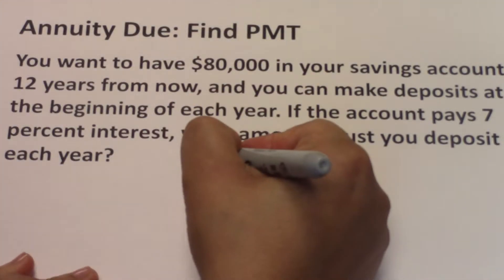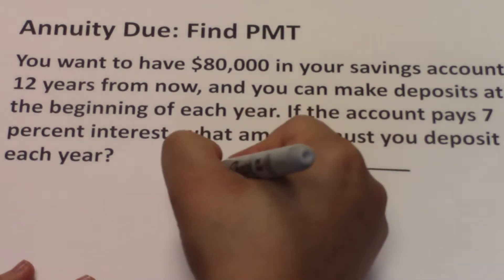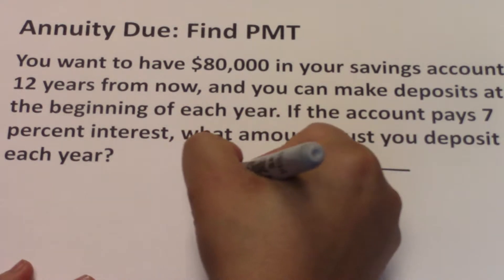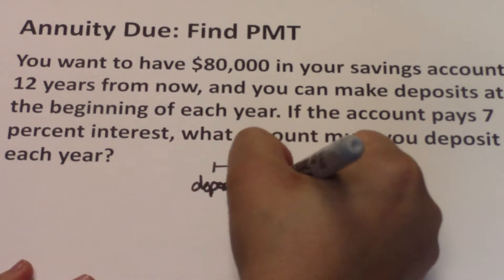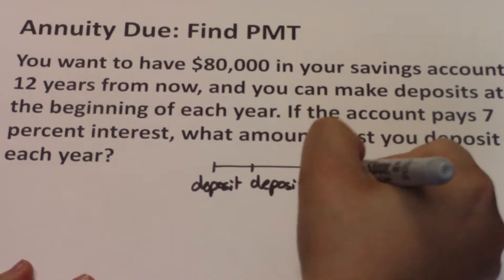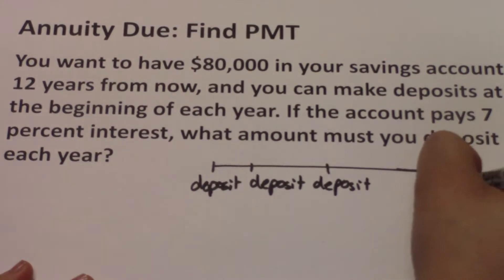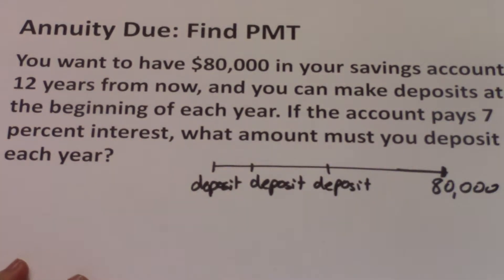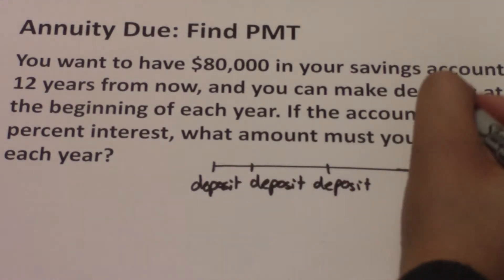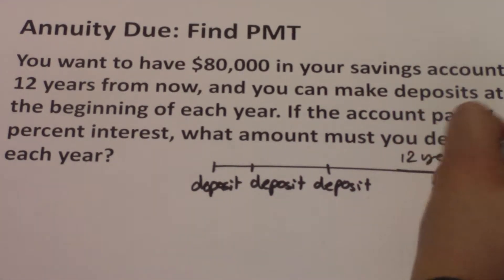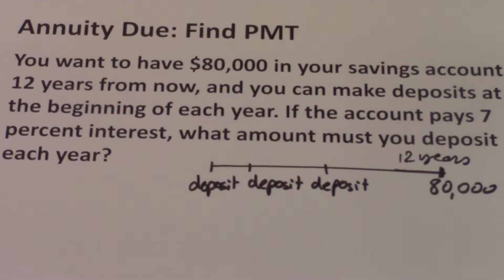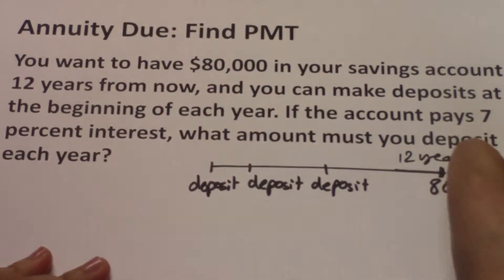So what happens here is you're making deposits. You're making a deposit today, another one at the beginning of next year, another one at the beginning of next year, and you want to have $80,000 at the end, or 12 years from now. So after 12 years you need to have $80,000. The $80,000 happens at the end of the timeline, which means this is a future value.